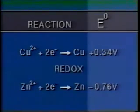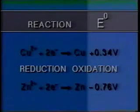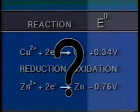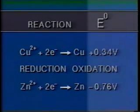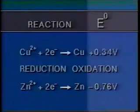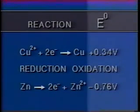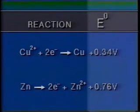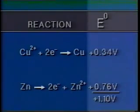Obviously, since batteries involve redox reactions, both of these reactions cannot both be reduction reactions as shown. The higher half-cell potential of copper compared to zinc means that copper ions will have a greater attraction for electrons than zinc ions. So the copper reaction will be a reduction reaction, and the zinc reaction must be reversed to become oxidation — and the sign of its half-cell potential must be reversed as well. It's easy to find the potential difference for the reaction by adding the two half-cell potentials.